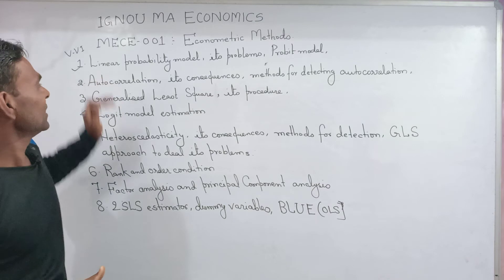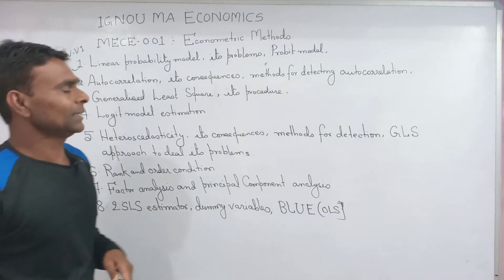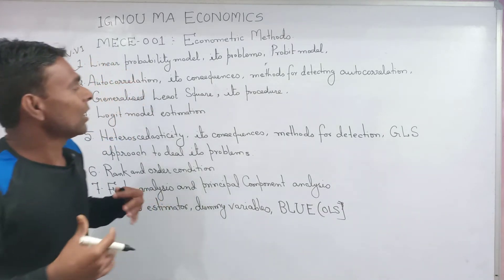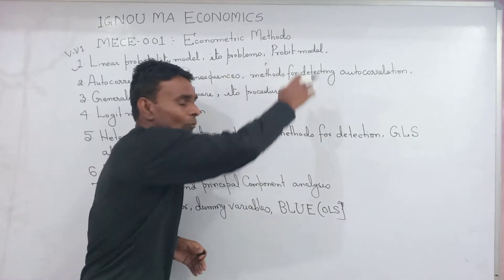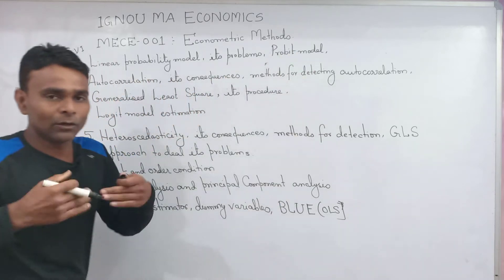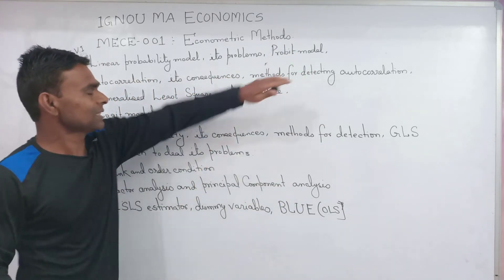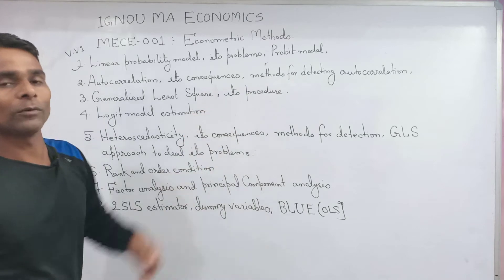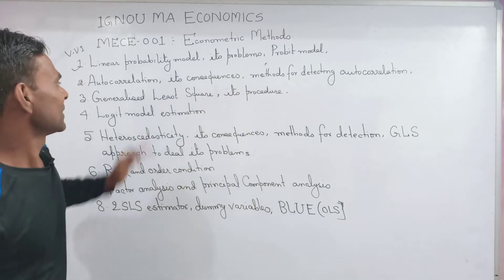The first topic is the linear probability model — its problems, and how the probit model takes care of those problems, that is, how the probit model overcomes and resolves those issues.